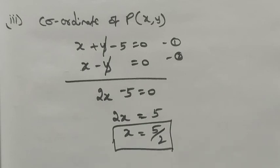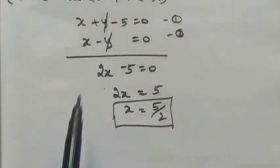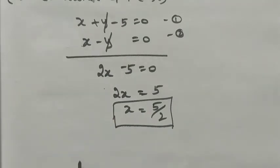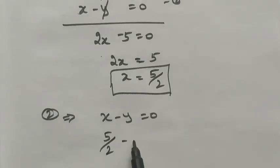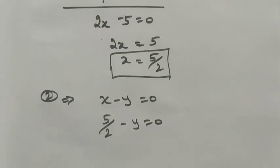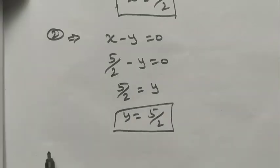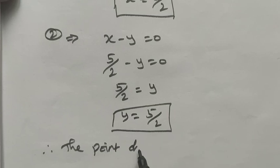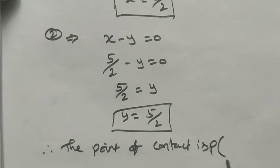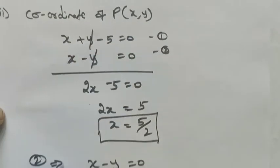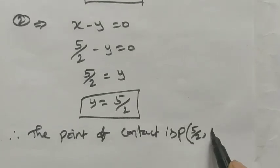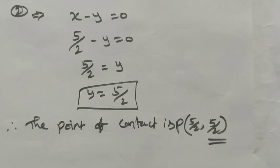Now substitute x = 5/2 into equation 2: (5/2) - y = 0, so y = 5/2. Both x and y values are 5/2. Therefore, the point of contact P is (5/2, 5/2). Thank you students.